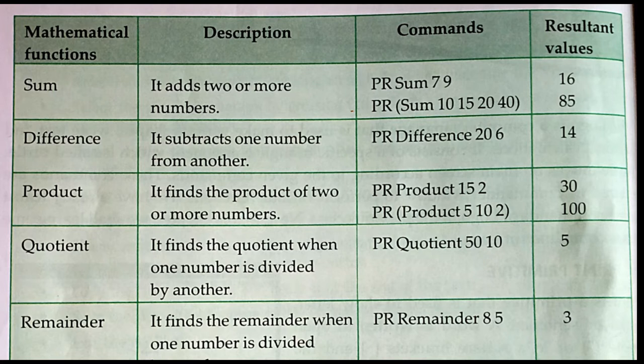PR difference 20 6 displays 14 — that is 20 minus 6. In the same way, we can find the product by using PR product 15 2, that is 15 into 2, and it displays the result as 30. We can also find the quotient. PR quotient 50 10 — that is 50 divided by 10 — and we will get the result as 5.